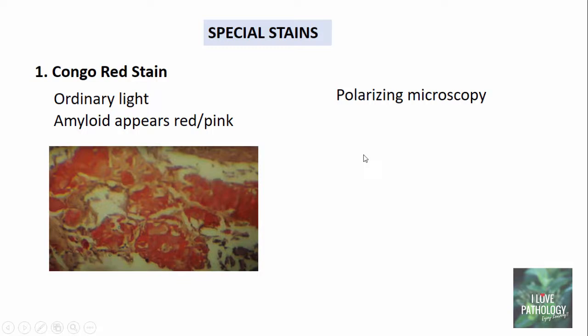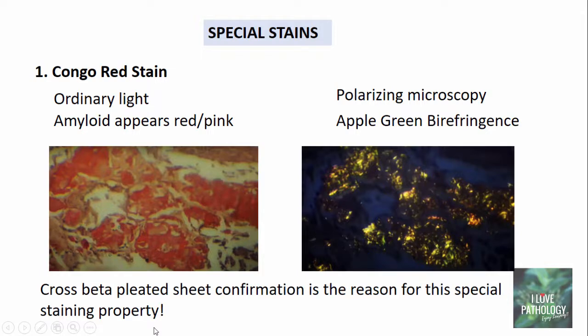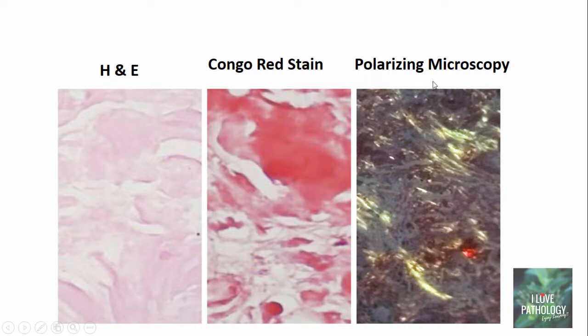If the same Congo red-stained slide is observed under polarizing microscopy, the characteristic feature is apple green birefringence. This is due to the cross beta-pleated sheet conformation of amyloid, which is the reason for this special staining property. Congo red staining combined with demonstration of apple green birefringence under polarizing microscopy is diagnostic of amyloid. Under H&E the deposits appear eosinophilic and hyaline-like; under Congo red they appear reddish; and under polarized light, apple green birefringence is seen.